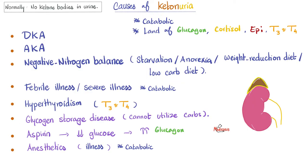Normally there should be no ketone bodies in the urine. So what are the abnormal causes of ketone bodies in the urine? Well, all of these have to do with a catabolic state, a starvation state — the land of not insulin, but glucagon, cortisol, epinephrine, and thyroid hormone.